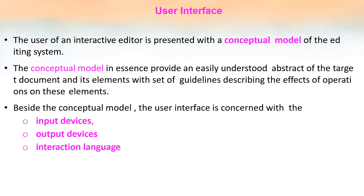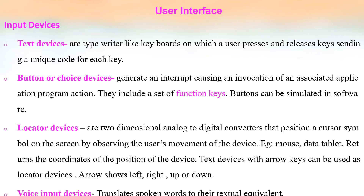Regarding the user interface — how a user interacts with the editor — there is a conceptual model that provides an easily understood abstraction of the target document and its elements, along with a set of rules describing the effect of operations on these elements. Beyond the conceptual model, the user interface is concerned mainly with three things: input devices, output devices, and the interaction language.